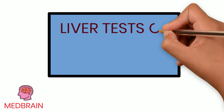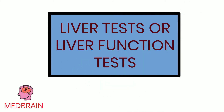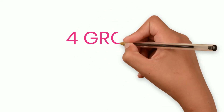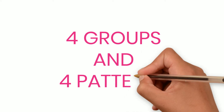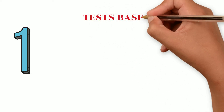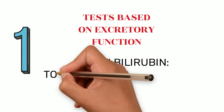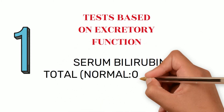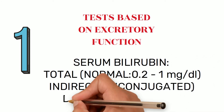Liver function tests can be categorized into four groups and four patterns. The first group is based on the excretory function of the liver, which includes serum bilirubin — total, indirect or unconjugated fraction,